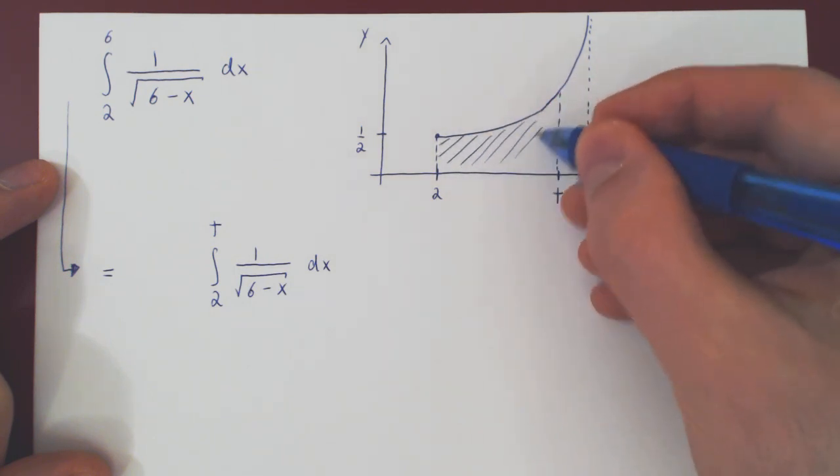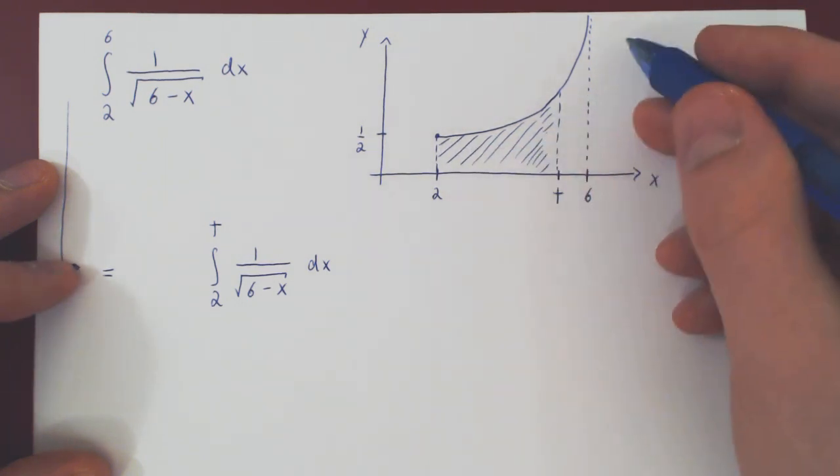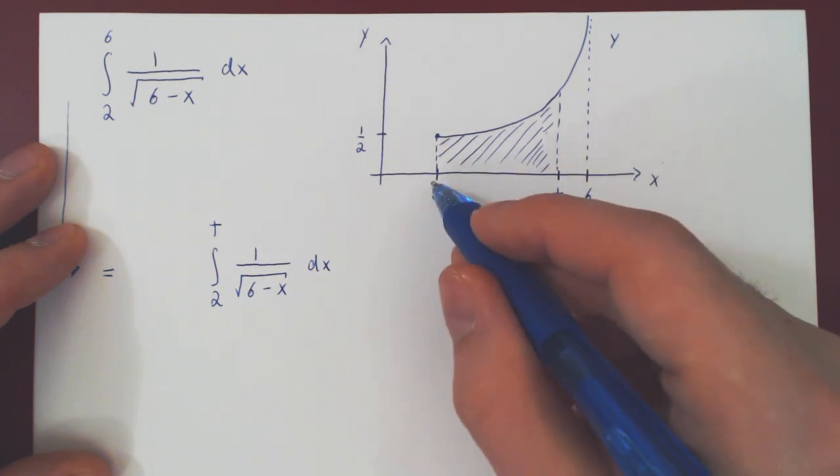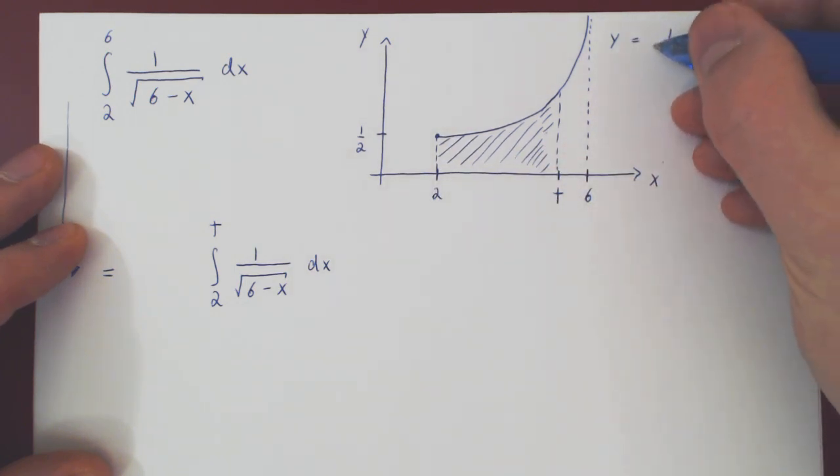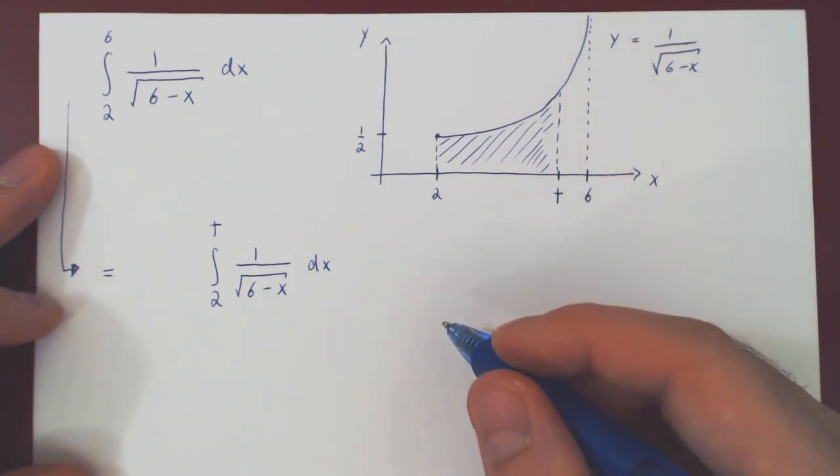under the curve between x equals 2 and x equals t, and again this is the graph of, at least over the interval from 2 to 6, of 1 over the root of 6, 1 over the root of 6 minus x.